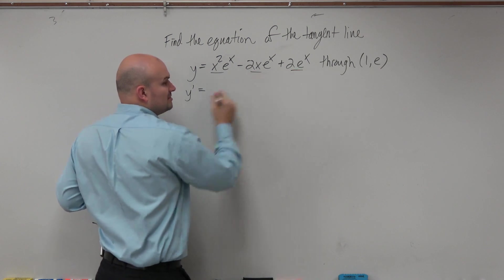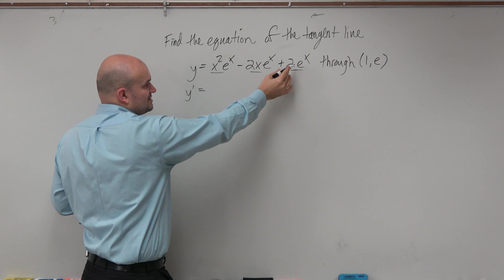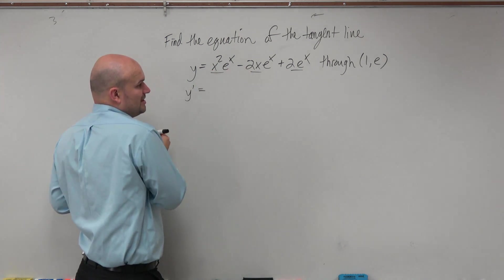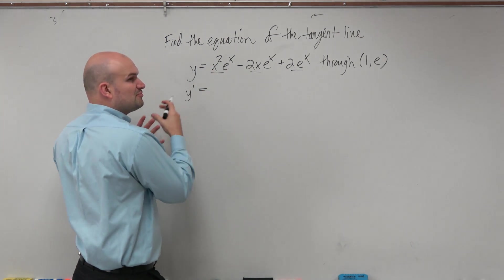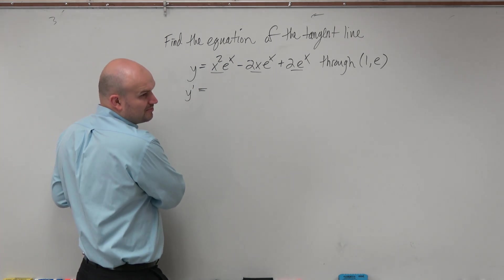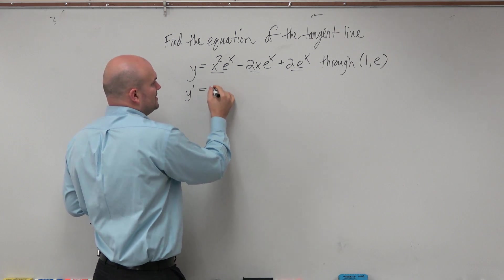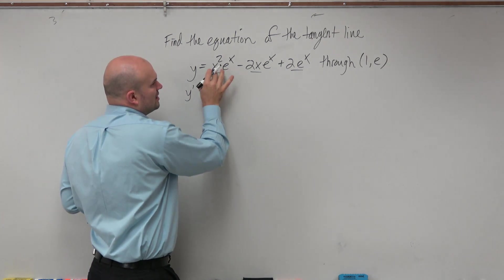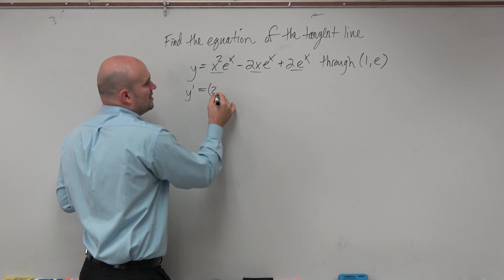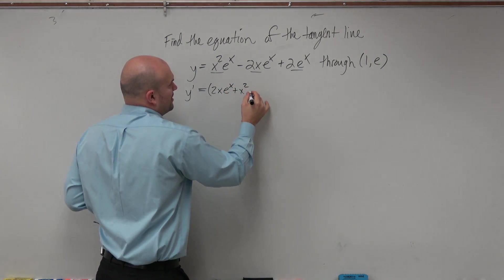We do have some terms, so we're going to have to apply the product rule for each one of these, or at least for the first two. I'm going to use parentheses to group them. They're not really necessary, but it's better to use parentheses and have things organized. So if I take the derivative of my first two terms, that would be 2x times e^x plus x² times e^x.